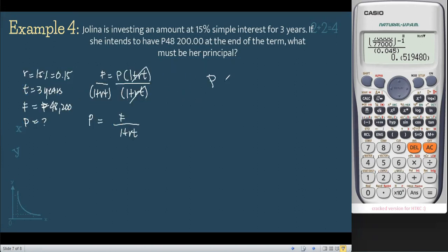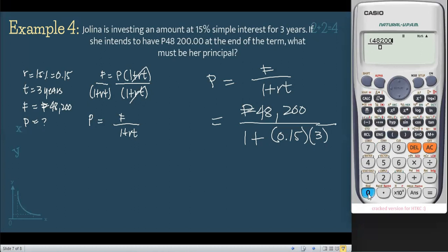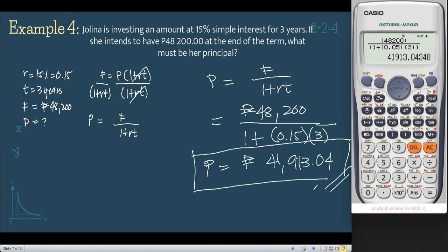The formula is P equals F over 1 plus RT. The future value is 48,200 all over 1 plus the rate, 0.15, times the time, 3 years. Using our calculators, the principal that Jolina must invest is 41,913.04 pesos. This is the principal that Jolina must invest.